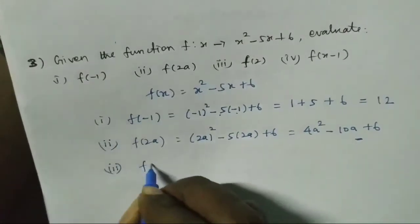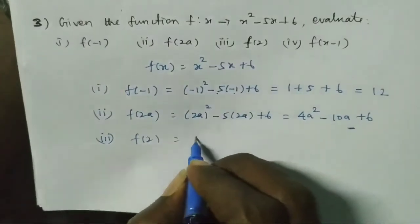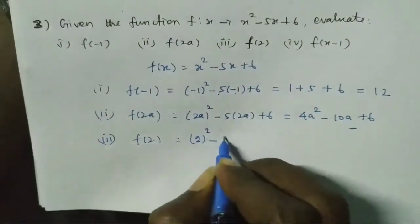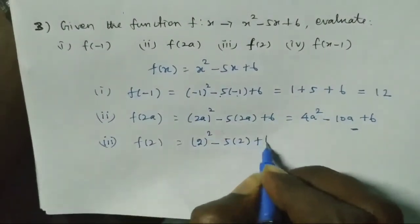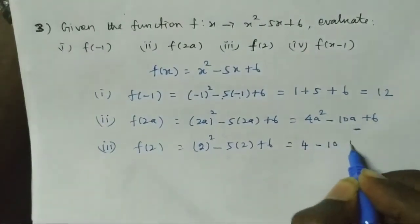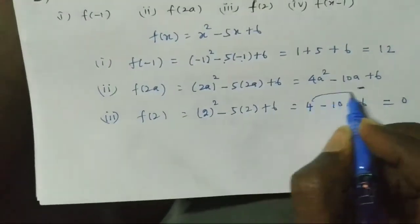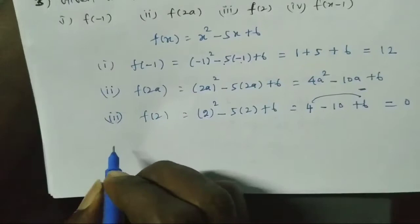Third point is f(2). So f(2) = 2² - 5(2) + 6. 2 square is 4, minus 5 into 2 is minus 10, plus 6. 4 plus 6 is 10, 10 minus 10 equals 0. The answer is 0.